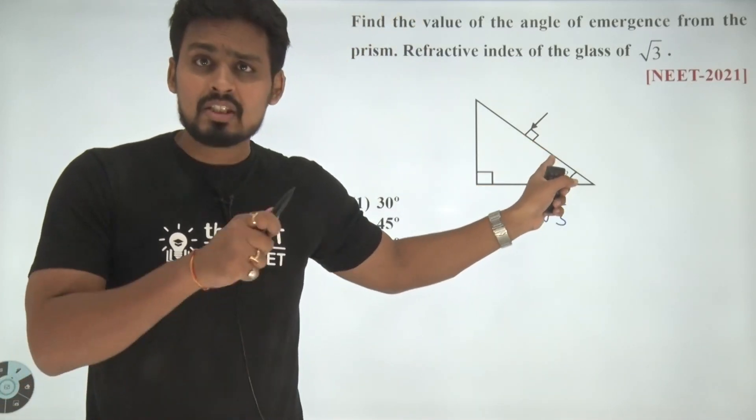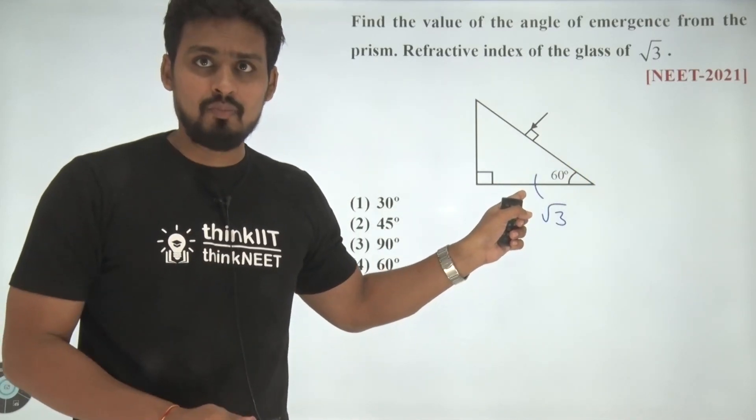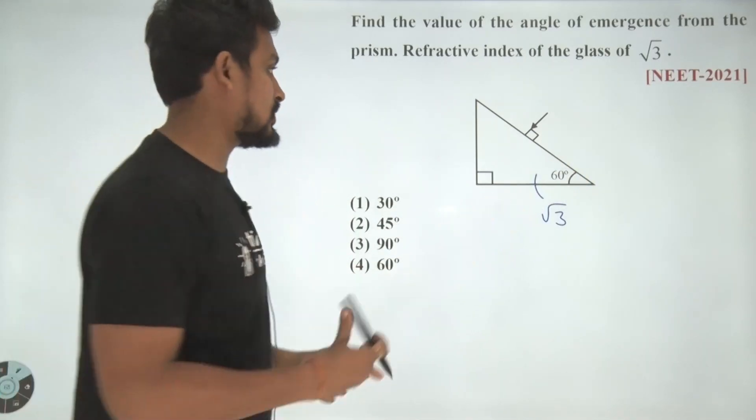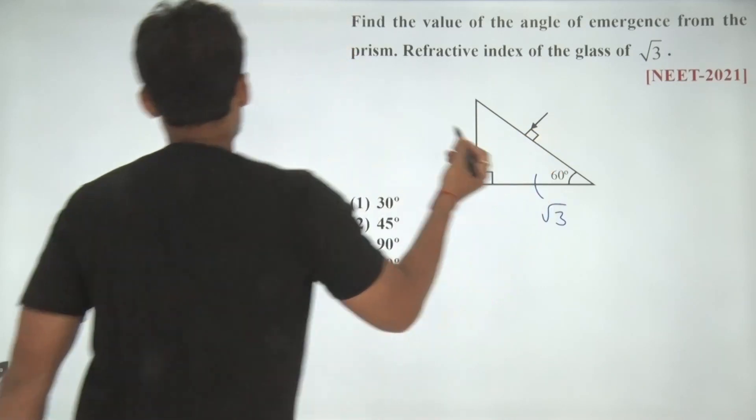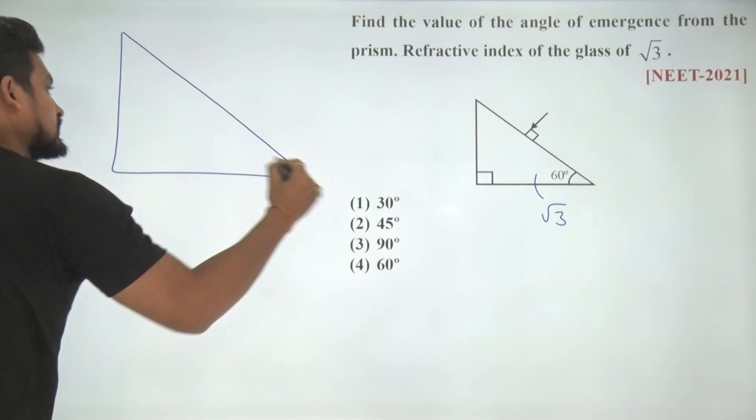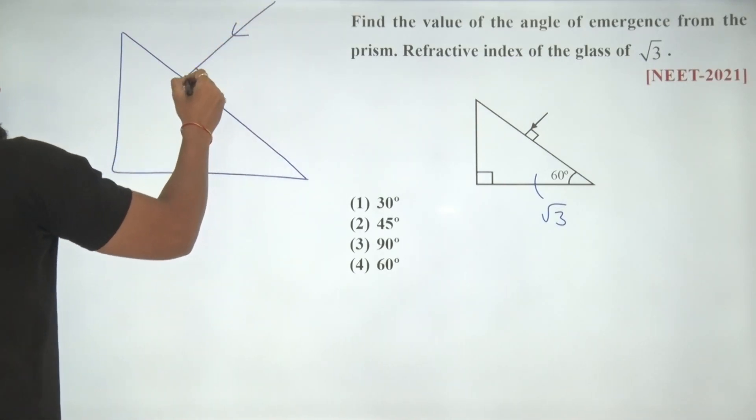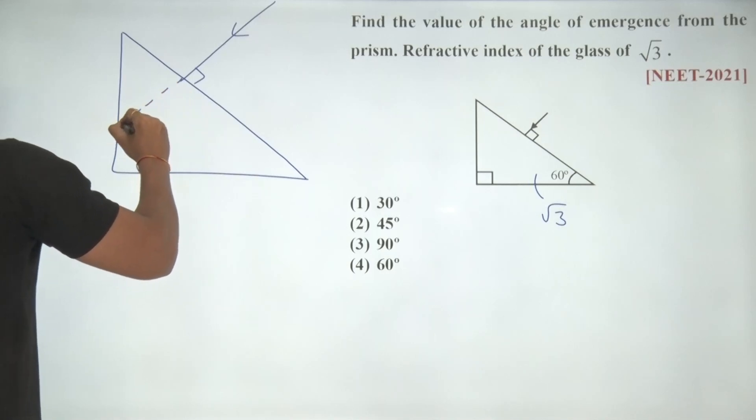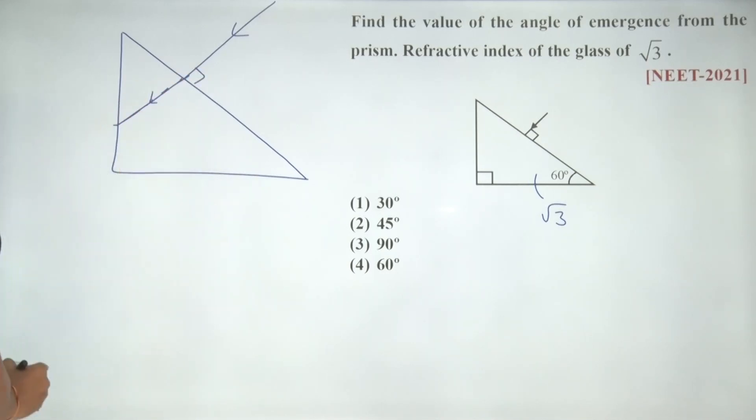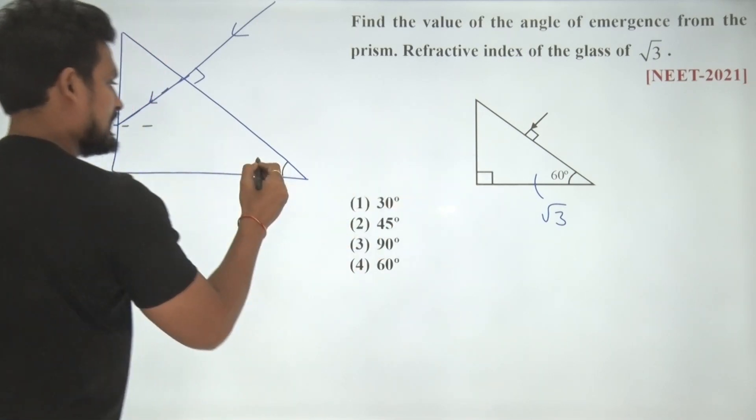We know in this particular case when the incident ray is entering the prism, angle of incidence is 0 and therefore angle of refraction must also be 0. Let me just draw this separately over here. The ray is coming like this, making an angle of incidence 0.